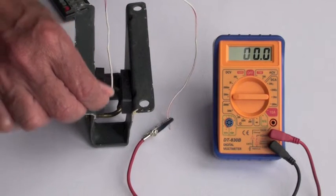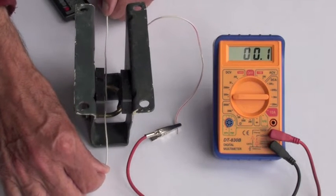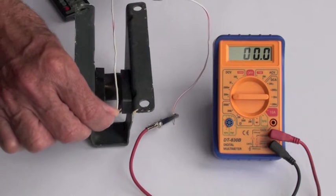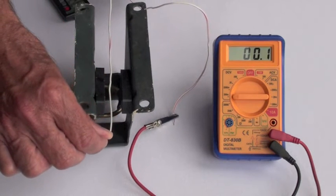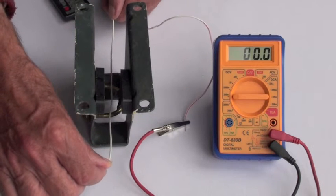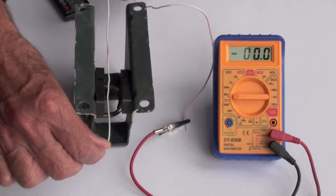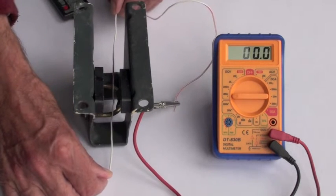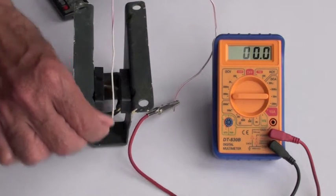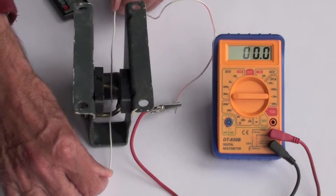If we pass a wire down between these two magnets cutting through the magnetic field, an EMF is produced, which is shown on the meter. Doing this slowly, the EMF is small, positive moving down and negative moving up. If the wire is passed through quickly, then the EMF is higher, as you might expect.